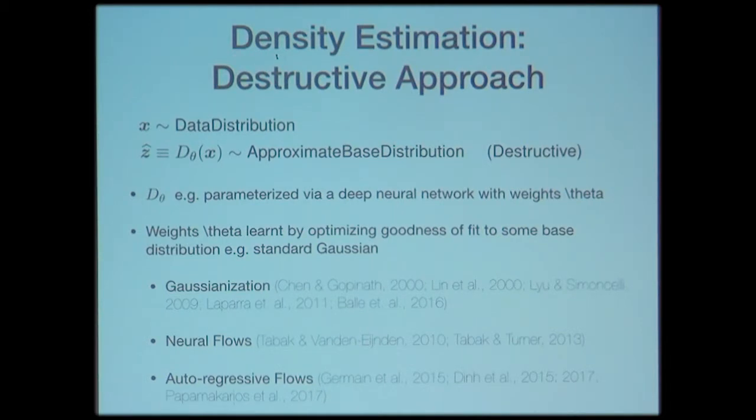You can't just use any deep neural network, because in the Lego block analogy, you don't just care about dismantling the tower — you need to do this in an invertible way so you can reconstruct it afterward. The transform D_theta must be invertible to be useful: you take the Gaussian and apply the inverse of your destructive transform to get an estimate of the data distribution. For computational reasons, you also want this inverse to be computable efficiently, so you need to worry about the Jacobian of your destructive transform.